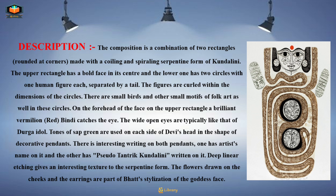The wide open eyes are typically like that of a Durga idol. Tones of sap green are used on each side of Devi's head in the shape of decorative pendants. There is interesting writing on both pendants — one has the artist's name on it and the other has pseudo-tantrik Kundalini written on it.